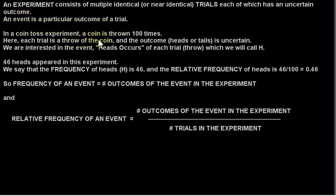In a coin toss experiment, a coin is thrown 100 times. Here, each trial is a throw of the coin. We try to make each trial identical as much as possible, and the outcome (heads or tails) is uncertain. We are interested in the event that heads occurs, which we will call event H.